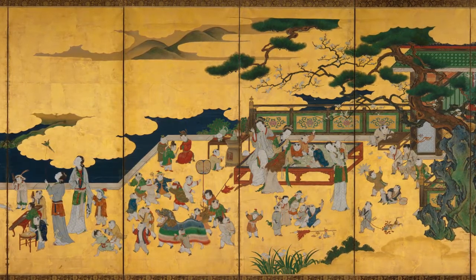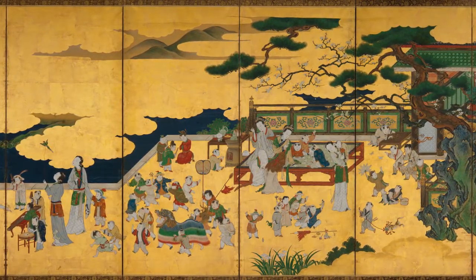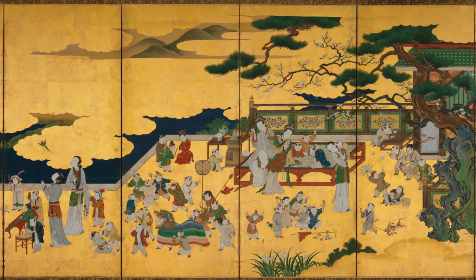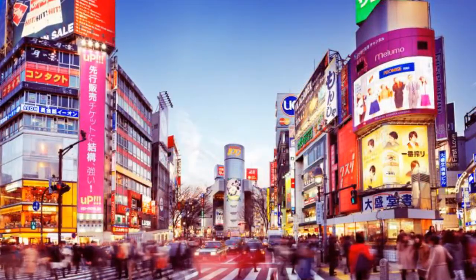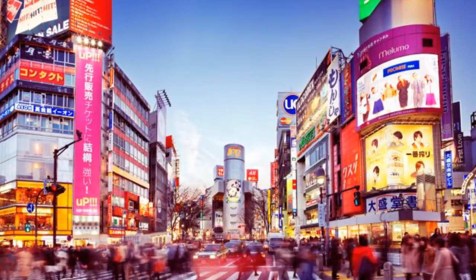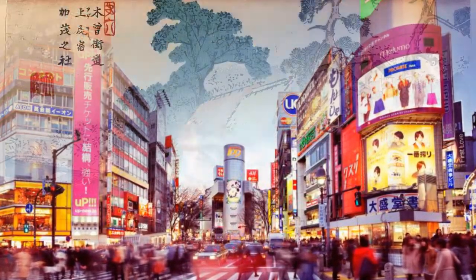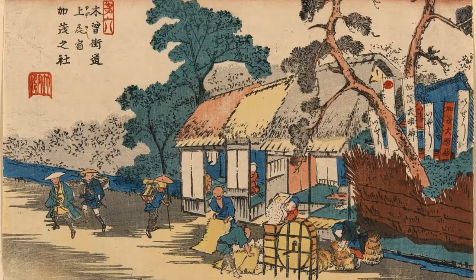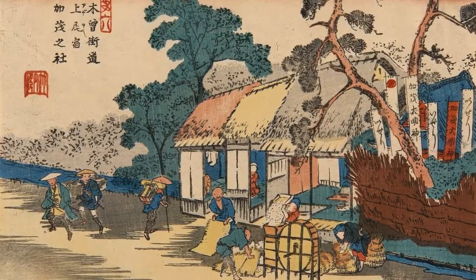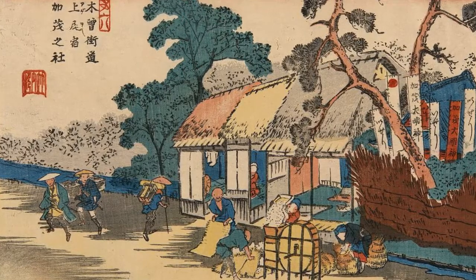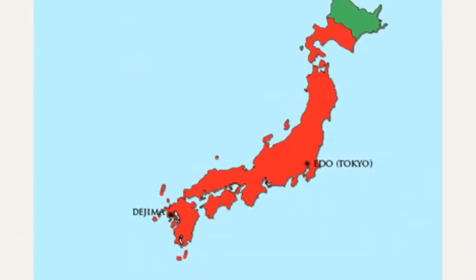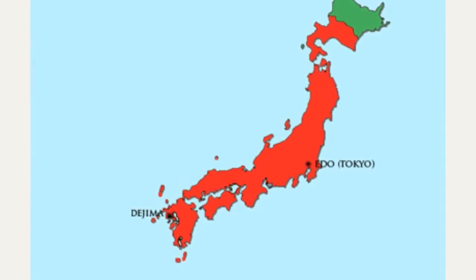The setting takes place in Edo, Japan during the Edo period, beginning in 1615 and ending in 1868. Fun fact — this city is now one of the largest cities: Tokyo, Japan. But before it became one of the world's largest cities, it was a small fishing site with a population of only a few hundred people. So what happened that put it on the map and made it a growing population?